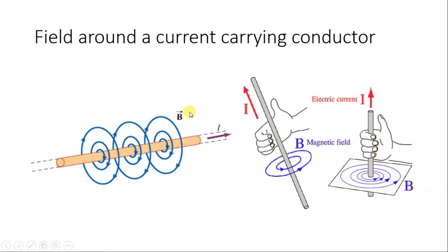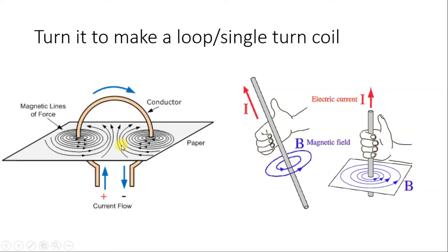For the magnetic field of a coil, we can use the right hand thumb rule. If there is a current-carrying conductor and we hold our right hand such that the thumb points in the direction of the current, then the direction of the fingers indicates the direction of the magnetic field lines — which are circular patterns around the conductor. If we turn the wire in the form of a loop or a single-turn coil, the current is going upward on the left side.